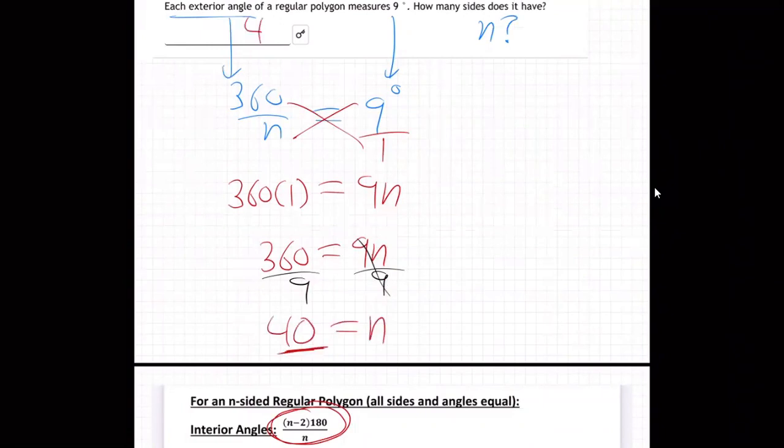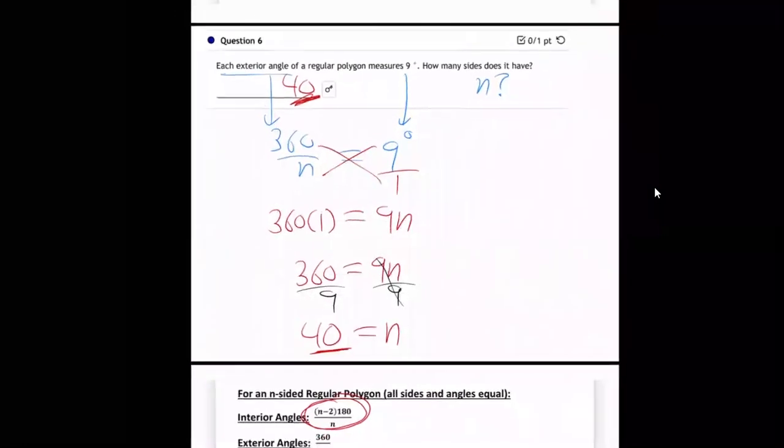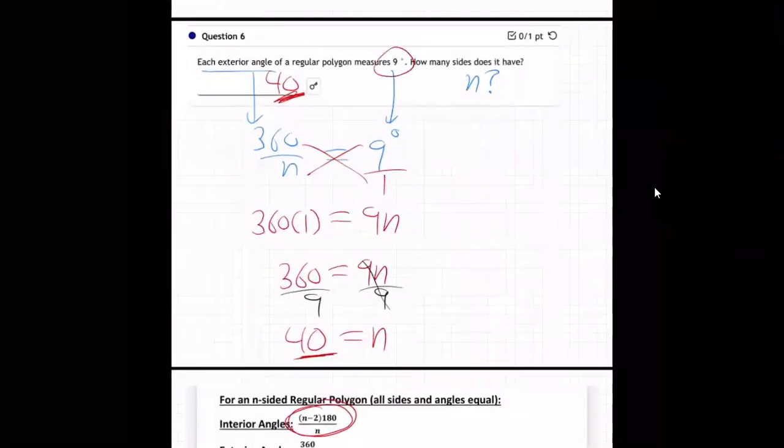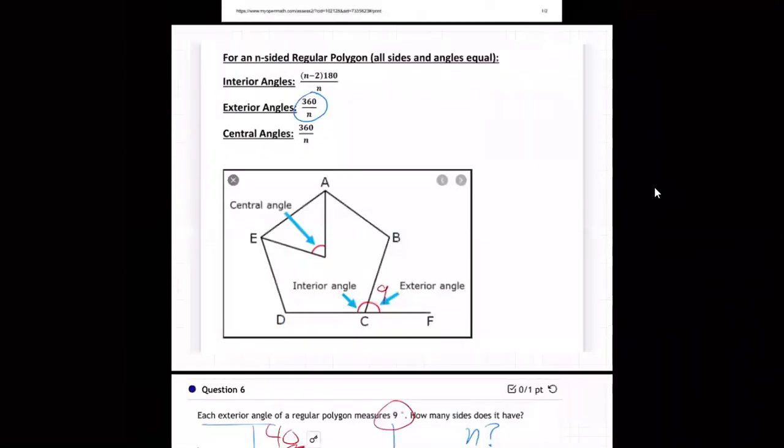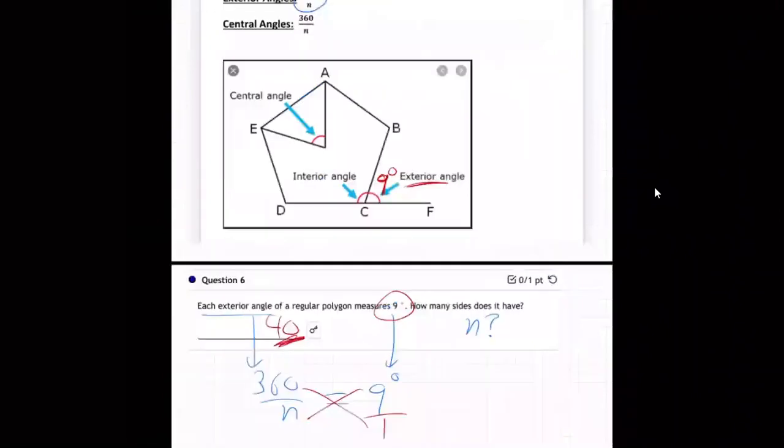So that must be a 40-sided object. So they can tell us how much the exterior angle is, nine degrees. They can say, here's the exterior angle. They're giving us this angle right here. They're saying this is nine degrees for some polygon. Exterior angle is nine degrees. How many sides does it have?